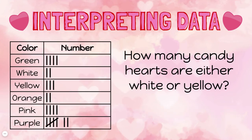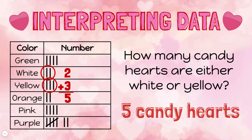Here's another question: how many candy hearts are either white or yellow? Well, this time I need to consider the number of white hearts — that's two, I can see in this frequency table — and the number of yellow hearts, which is three. To find the number of candy hearts that are either white or yellow, I need to add the white and the yellow hearts together. Five candy hearts are either white or yellow according to this frequency table.